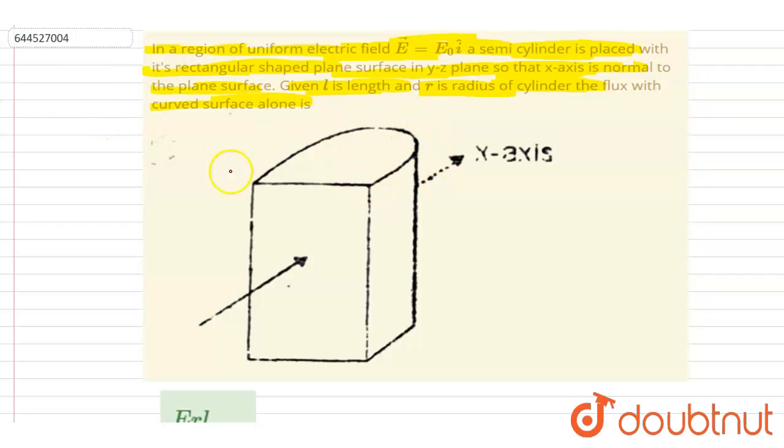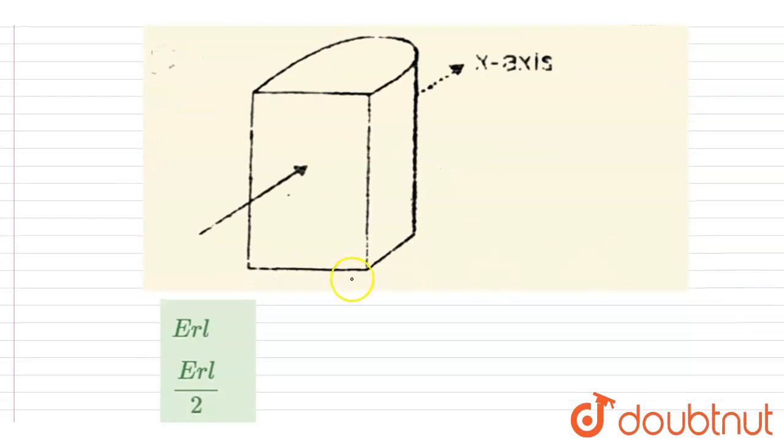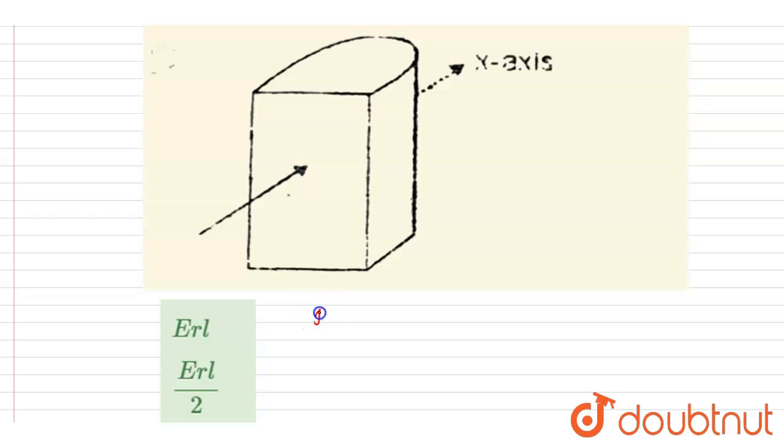So if you see this is a uniform electric field. In uniform electric field, the net flux through any enclosed surface will be zero.